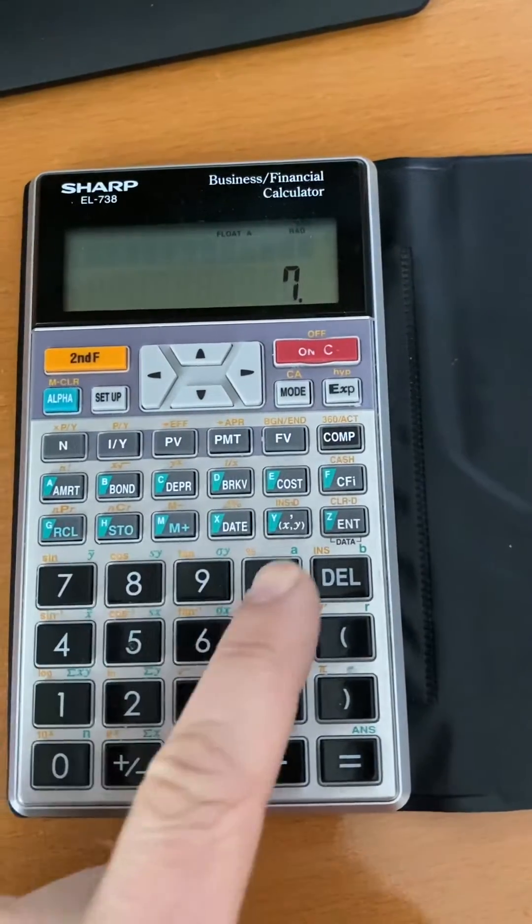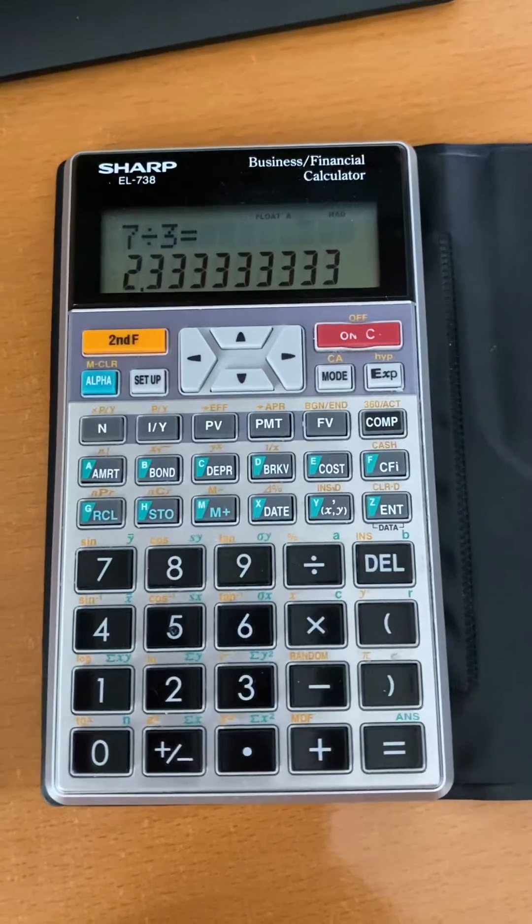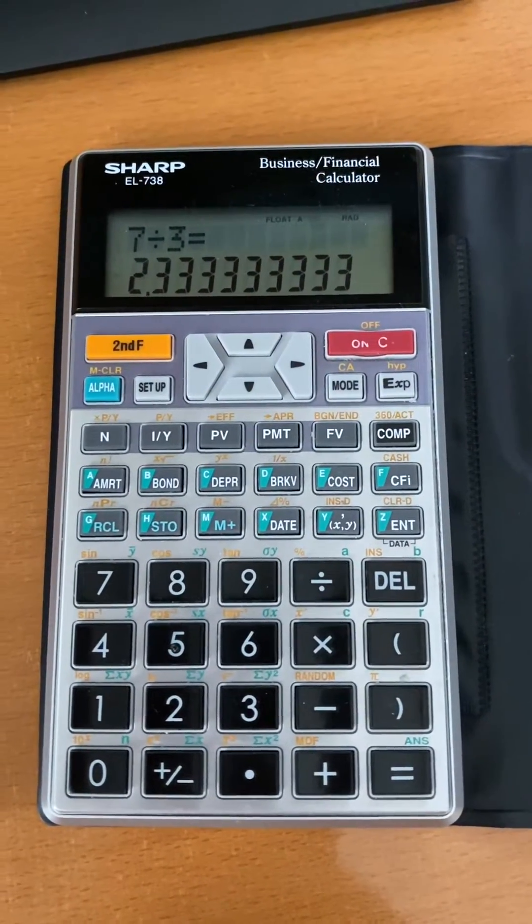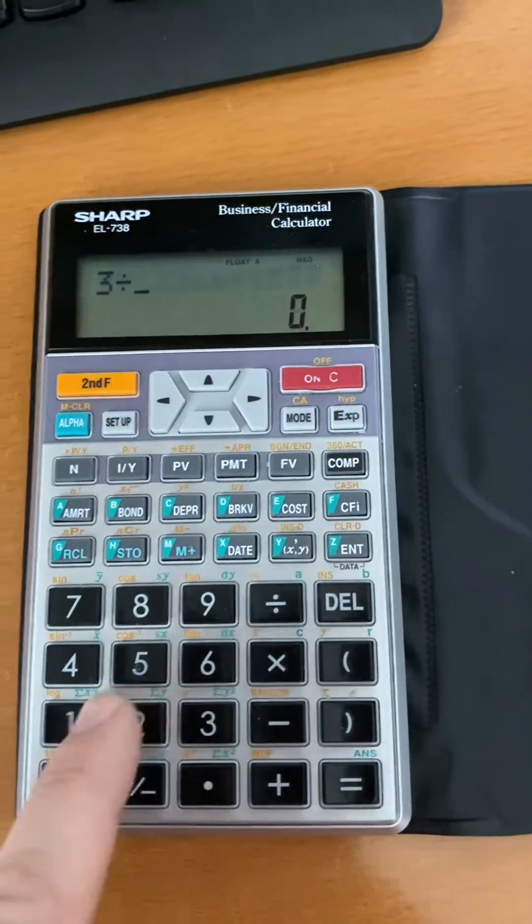If we go seven divided by three equals, it shows all the digits until they run out of screen. Another example: three divided by two.